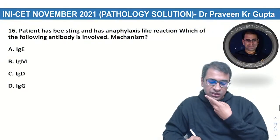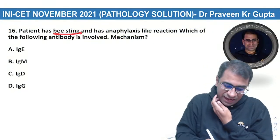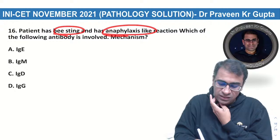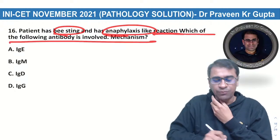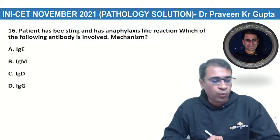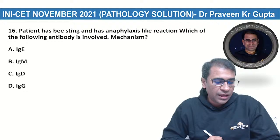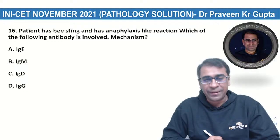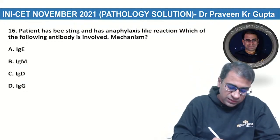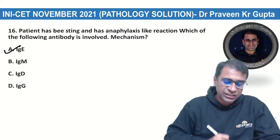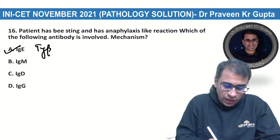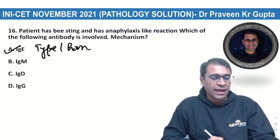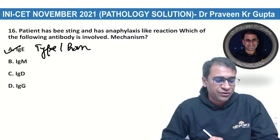A patient with a bee sting has an anaphylaxis-like reaction. Which antibody is involved and what is the mechanism? The answer is IgE-mediated type 1 hypersensitivity reaction.